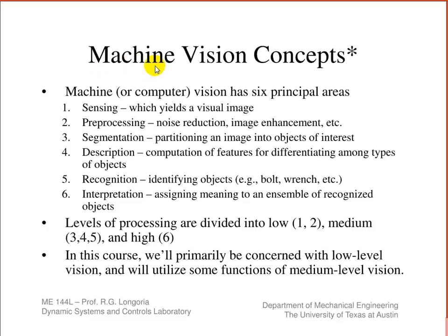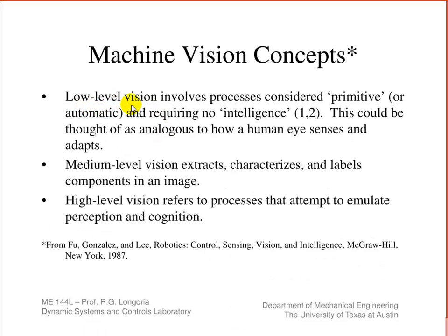Machine vision usually consists of six different areas. You might have sensing, preprocessing where you're cleaning up the image, and segmentation which involves partitioning the image into objects of interest. There's a description step to distinguish between objects, higher-level recognition to associate objects with known types, and finally interpretation — assigning meaning. These are referred to as low, medium, and high levels. Low-level vision involves primitive processes like acquiring images with no intelligence — just straight acquisition.